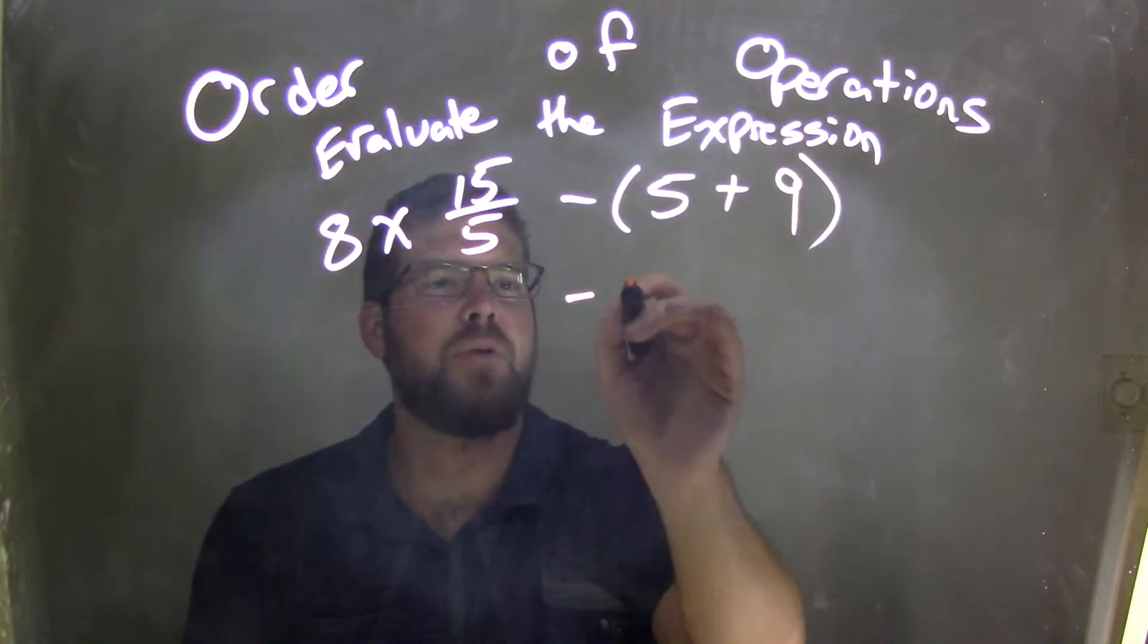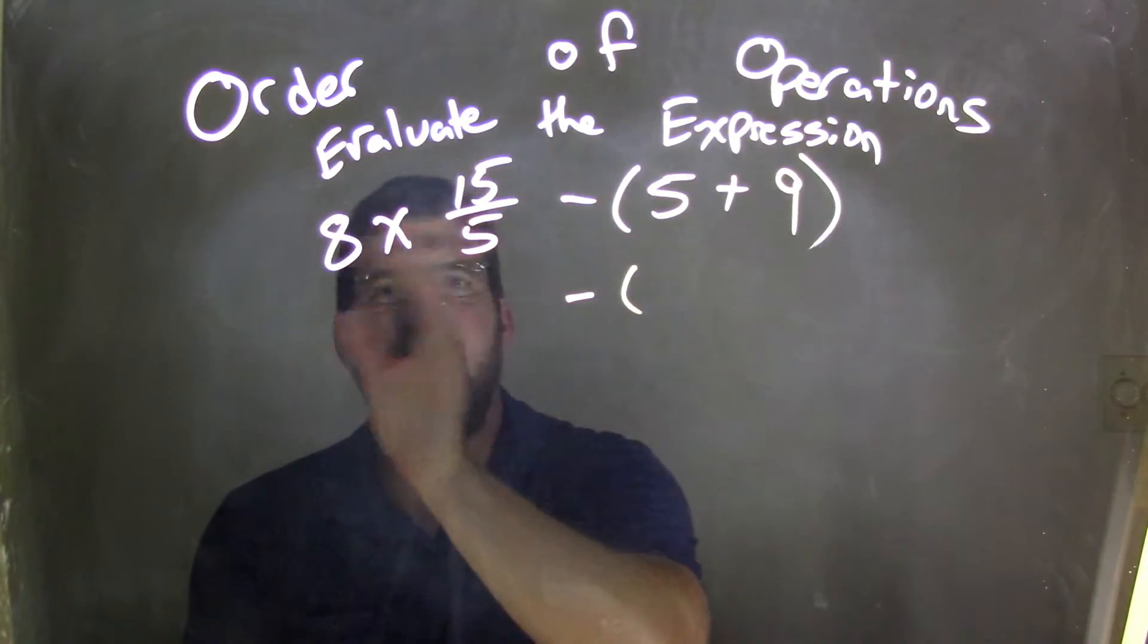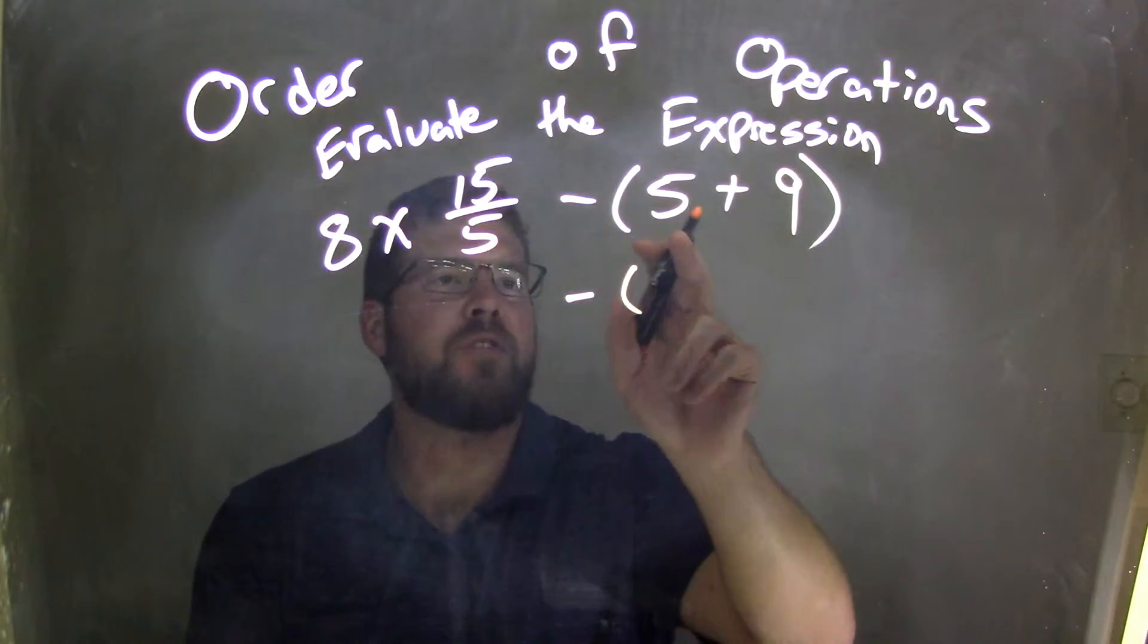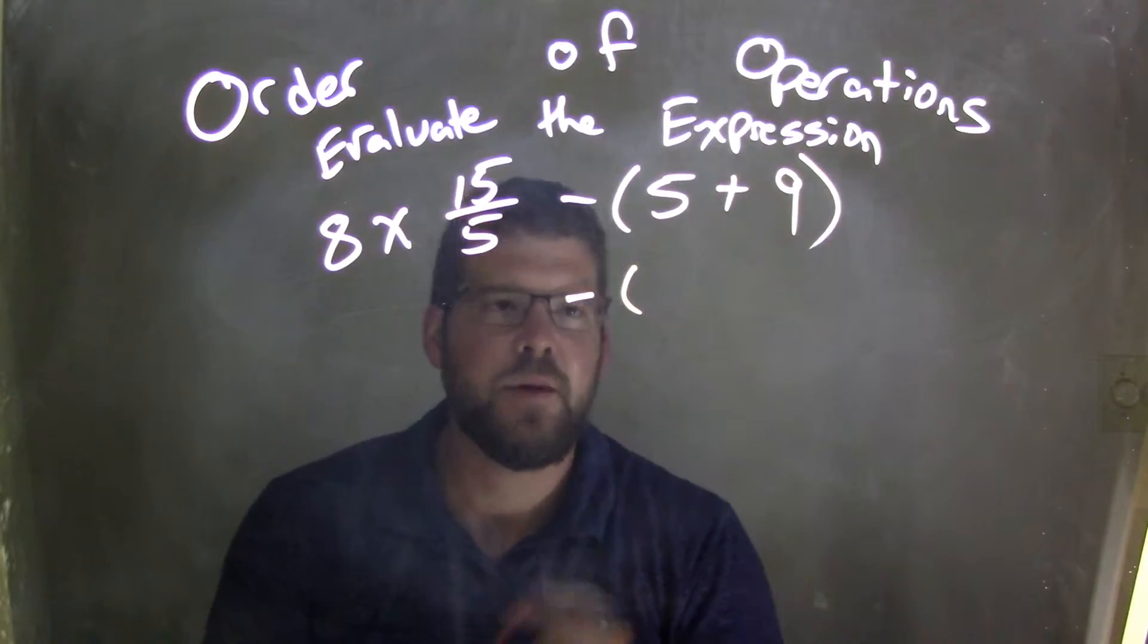So I see this fraction here separating the parentheses from the left side of the expression. 5 plus 9, well that adds up to be 14.